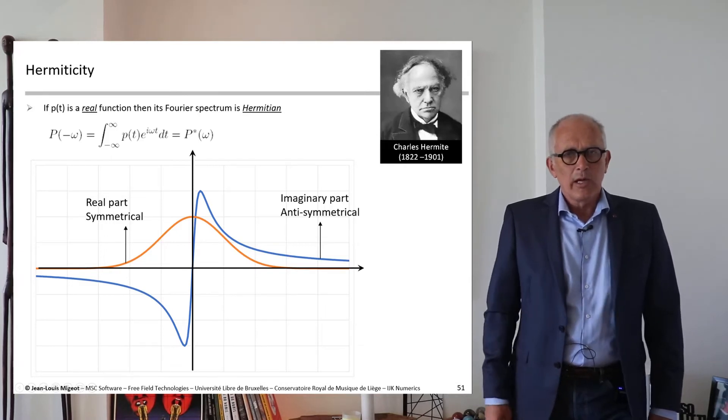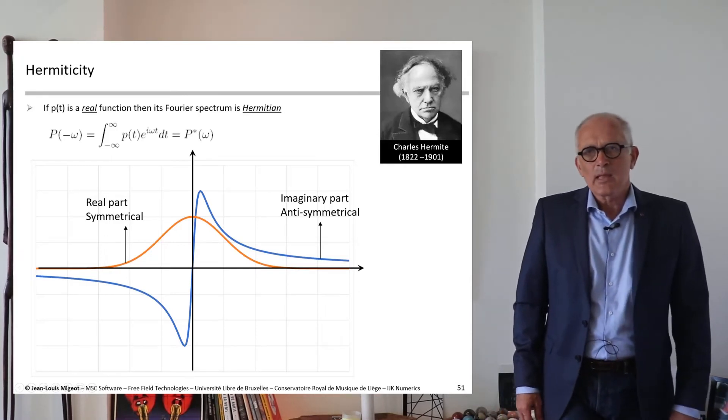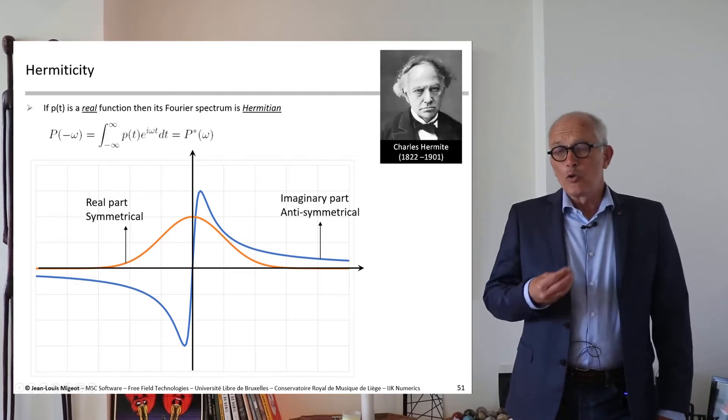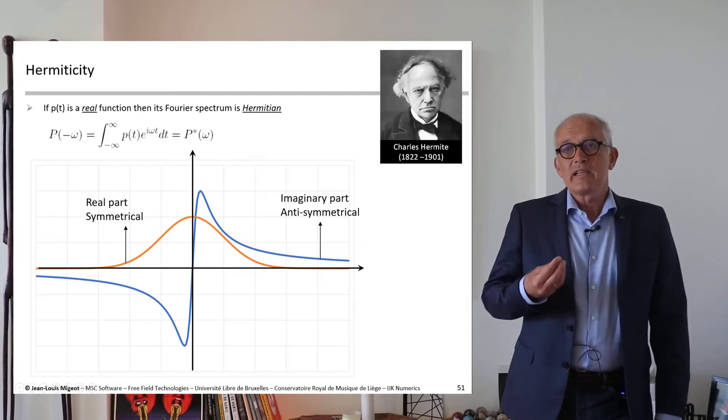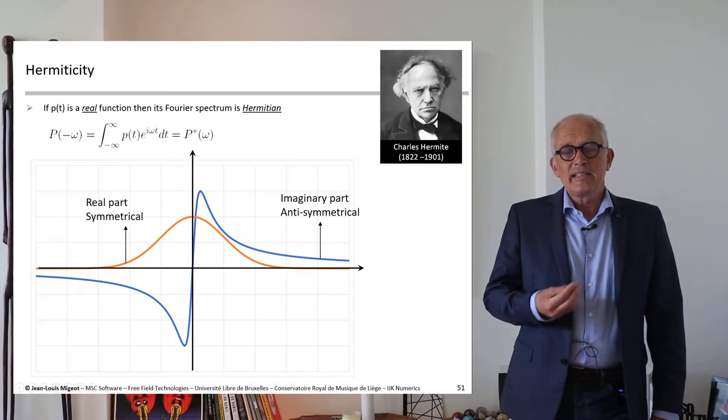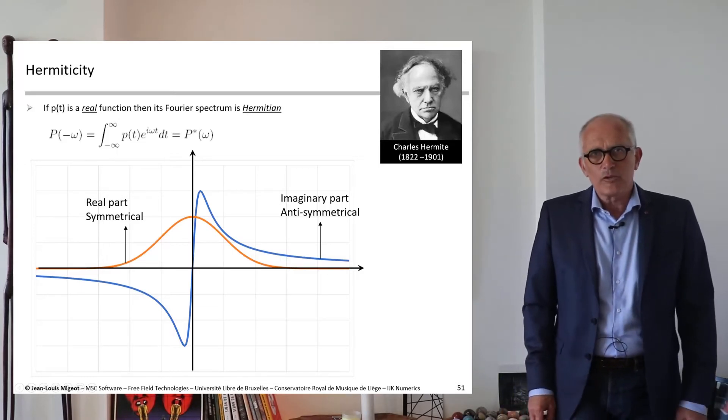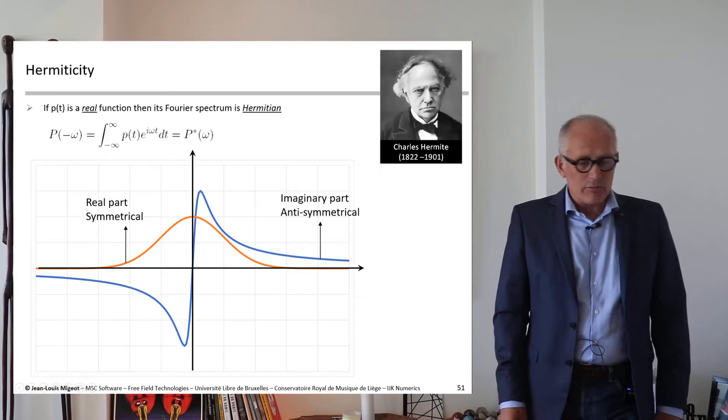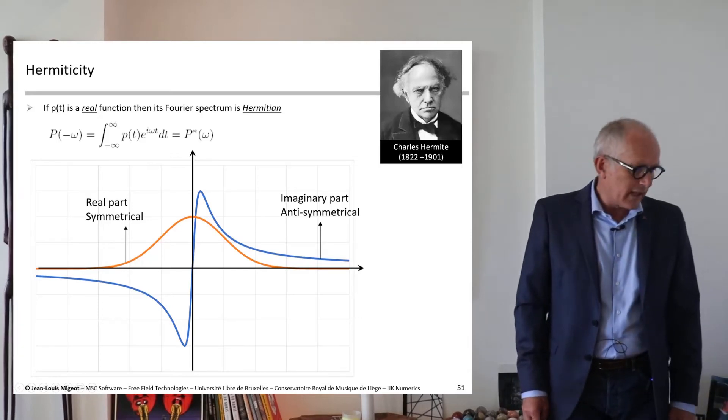It means that the real part of the spectrum is symmetrical and the imaginary part of the spectrum is anti-symmetrical, as you see on that graph.